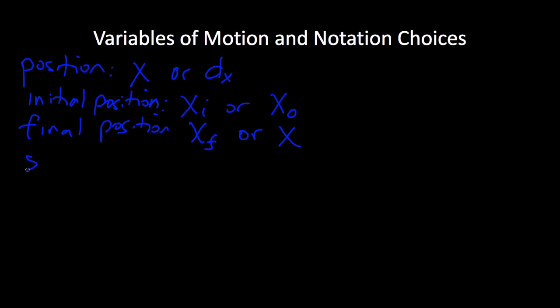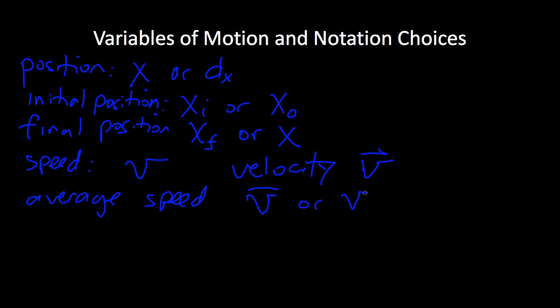Other variables include speed. Speed is given the symbol V. We've got velocity, V with an arrow over it—it's a vector. Average speed is V bar or V average. This is a little tricky because this bar, although used in most university textbooks, kind of looks like a vector. So I may use V average from time to time because you can have an average velocity vector or an average velocity scalar.